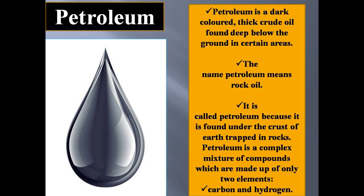Petroleum is a dark colored thick crude oil found deep below the ground in certain areas. The name petroleum means rock oil because we obtain petroleum from under the rocks — it is found under the crust of the earth trapped in rocks. Petroleum is a mixture of various hydrocarbons, which are mainly made up of carbon and hydrogen.